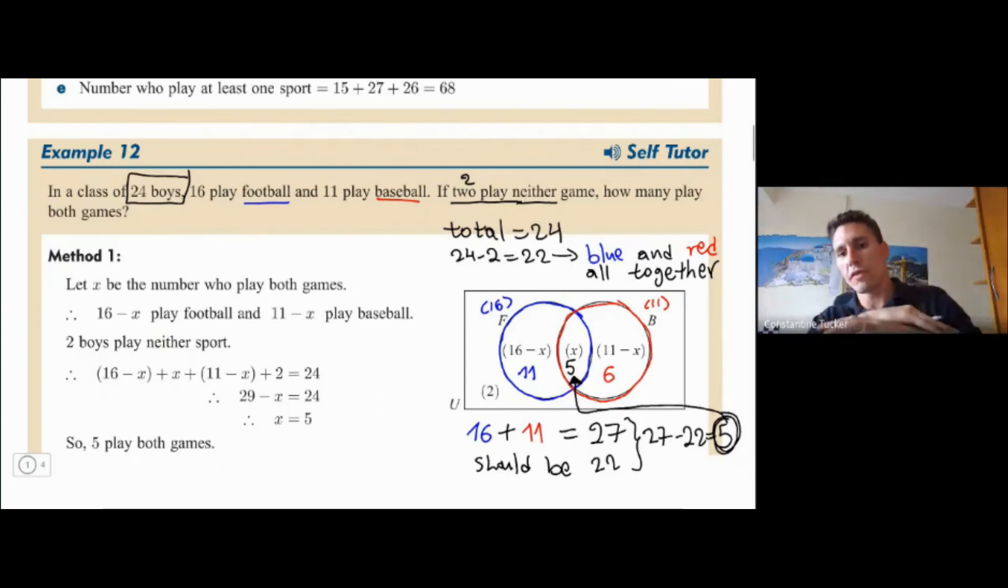So we have answered, we have found all the missing numbers here. And we could easily say, well, five play both games. If they asked us more questions, we could say 11 play only football, six play only baseball, that sort of thing. So keep this trick in mind. This is an algebraic problem with Venn diagrams.